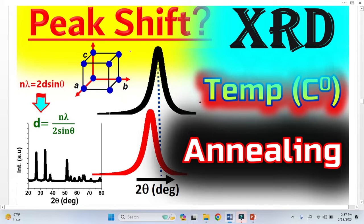Peak shift in XRD occurs due to many reasons. In this video, I am going to explain how and why peak shift occurs due to temperature or thermal annealing.